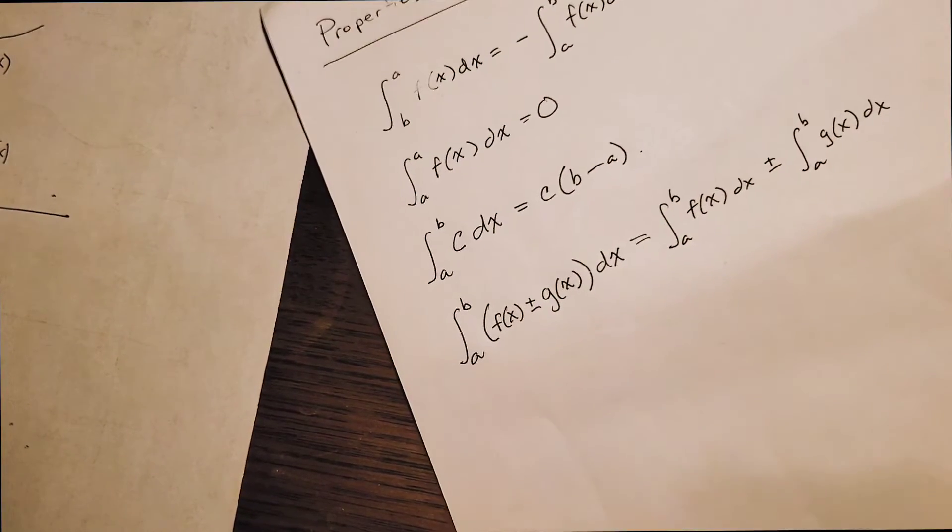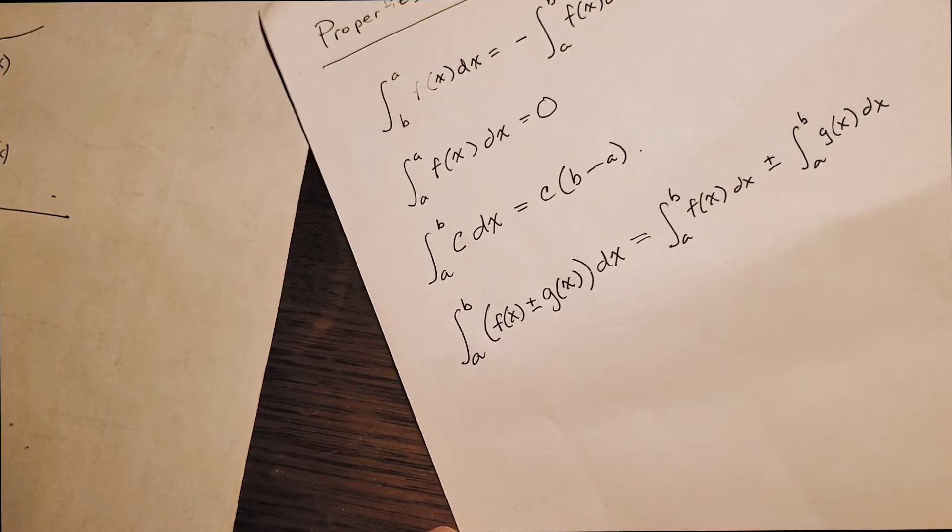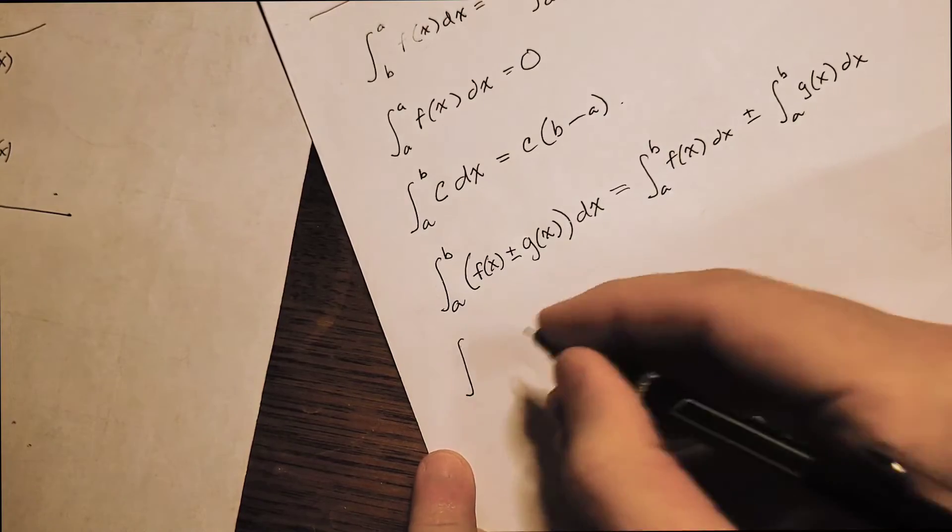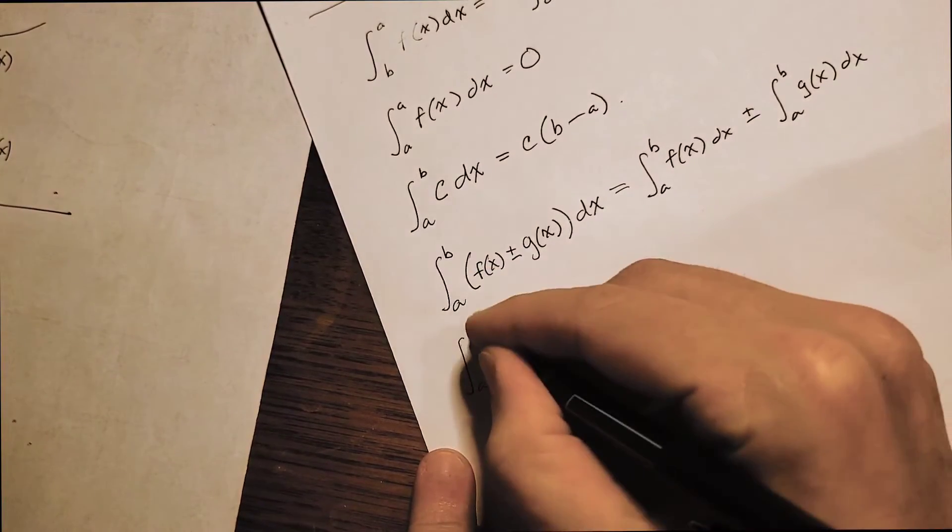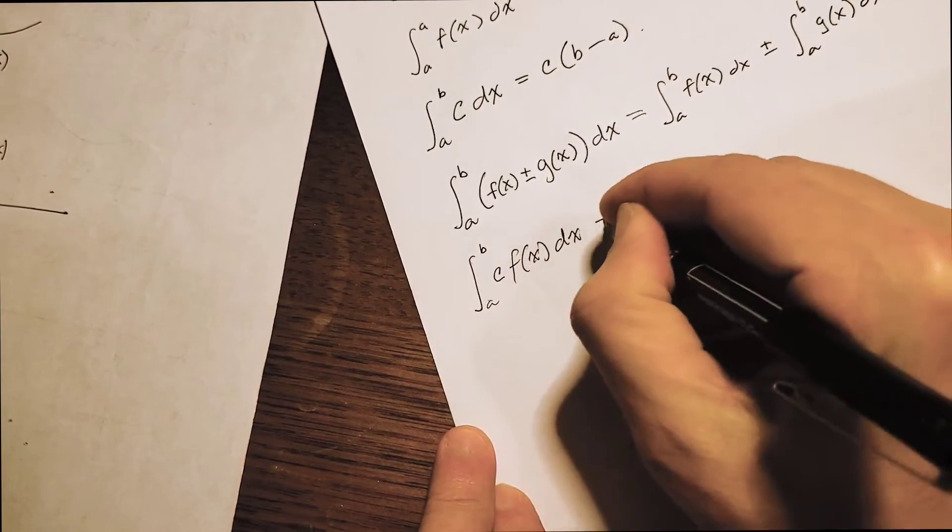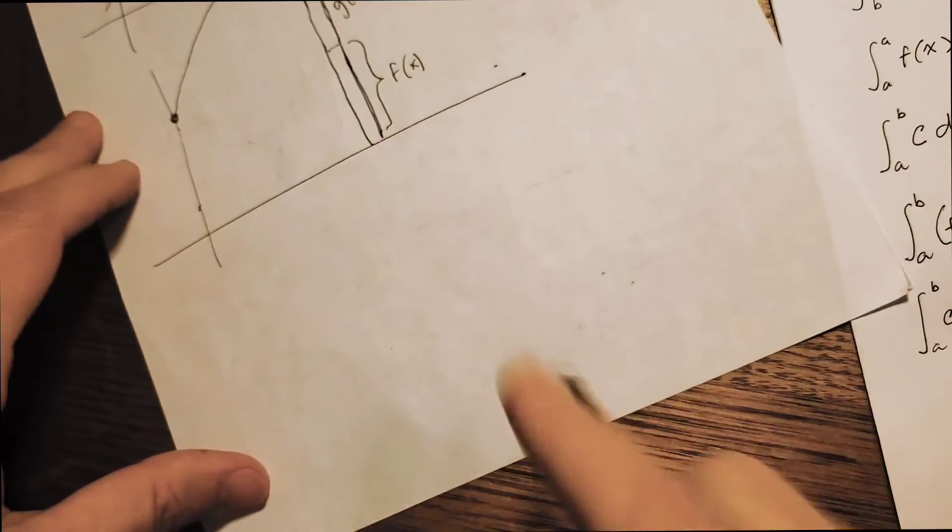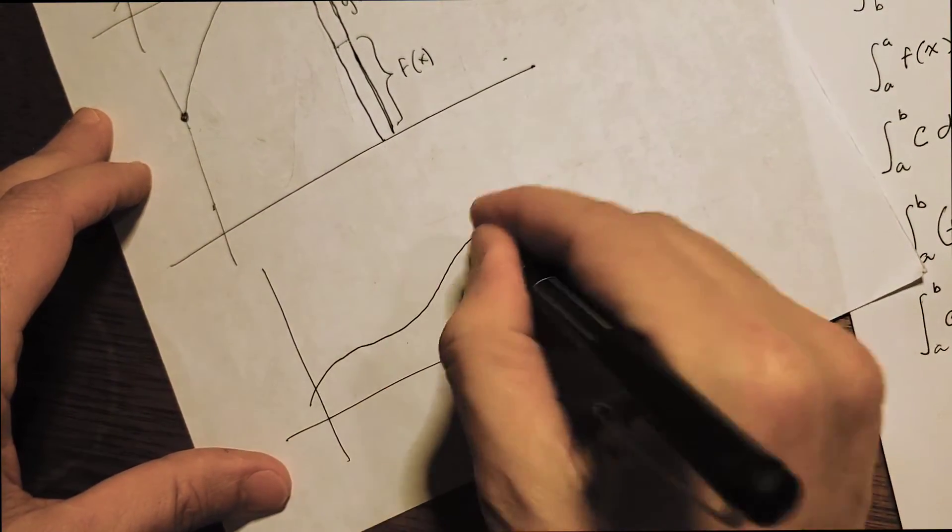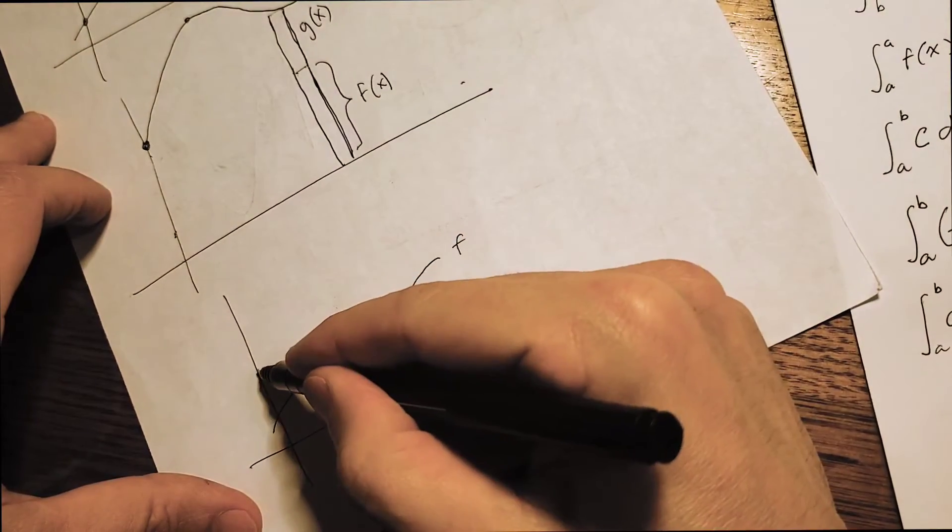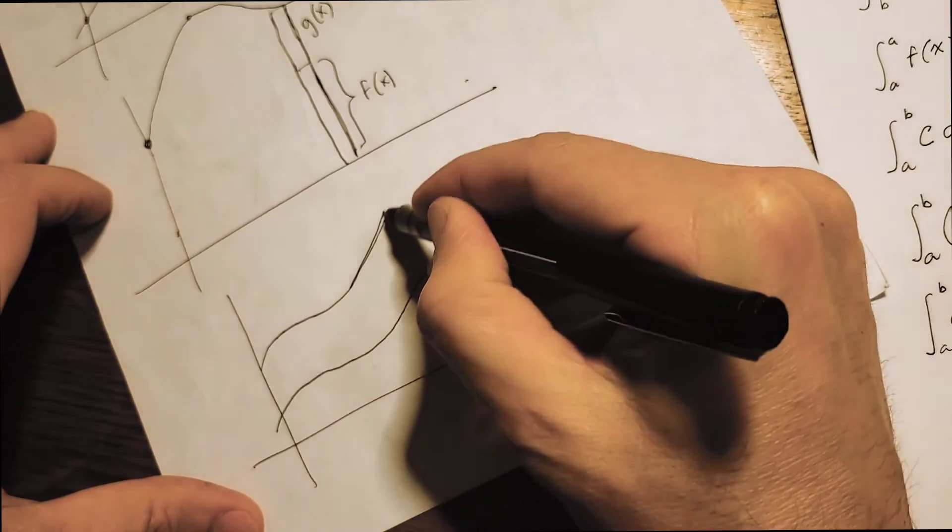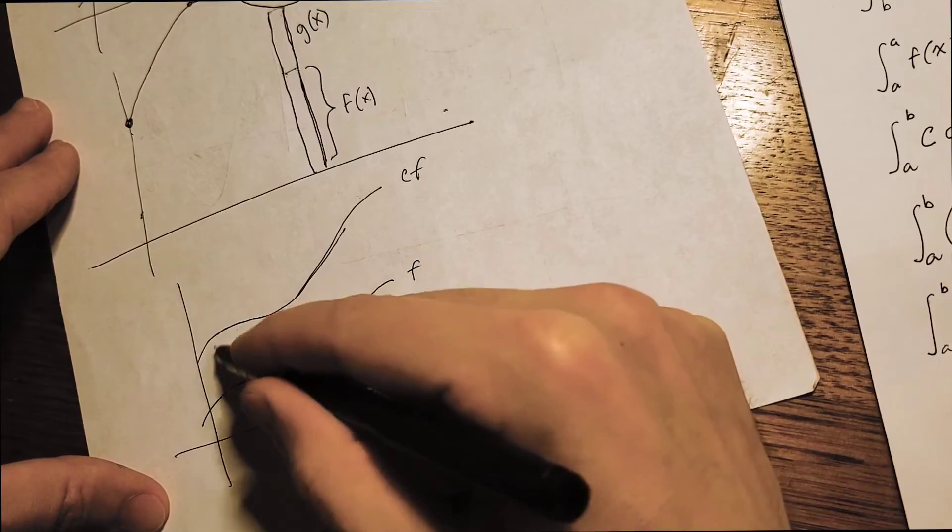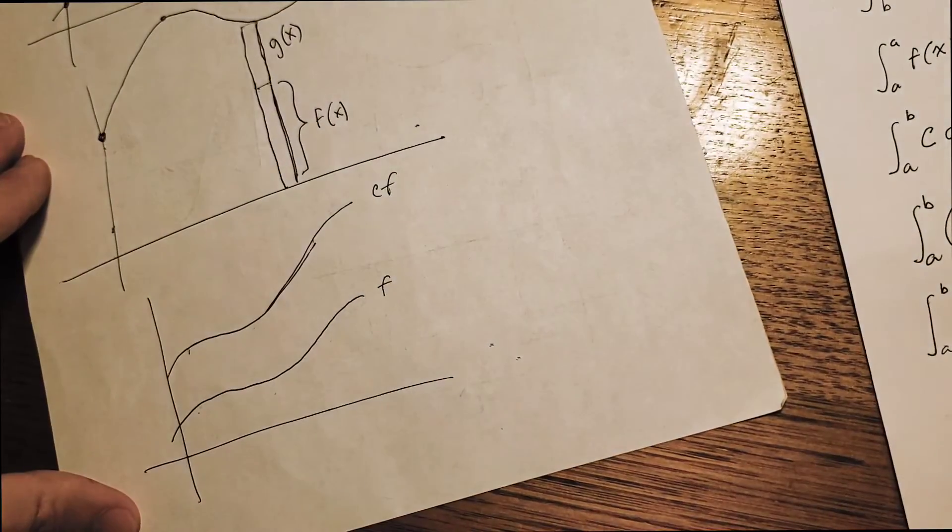Just a couple more. Two more for this video. So now we have, we'll take c as a constant again. And now we take a function and multiply it by a constant. So if here's f, let's say I multiply it by some number, maybe it's a number bigger than one. And so it stretches the function. I didn't do a great job of it, but let's say maybe I doubled it at each point. So each point is twice as high. That's going to make the area twice as big.